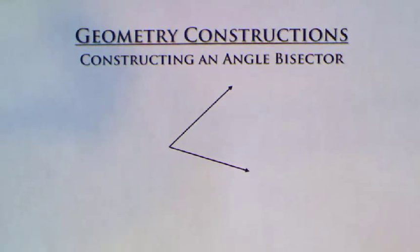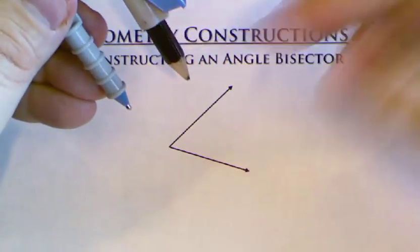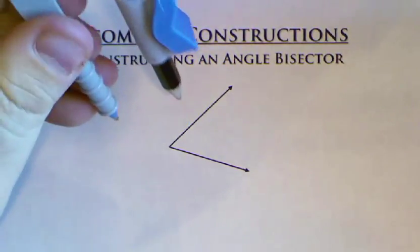For this construction, we're going to construct an angle bisector. The first step is to open up your compass to some size which is very convenient for you to work with, not too big, not too small.